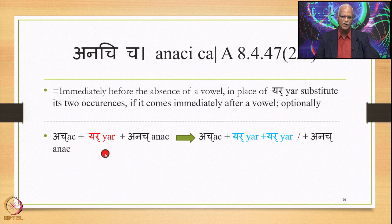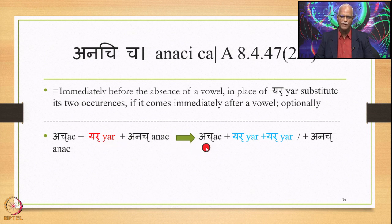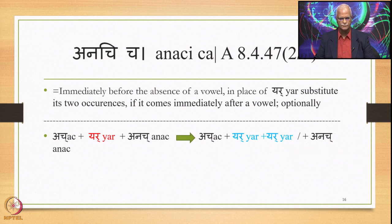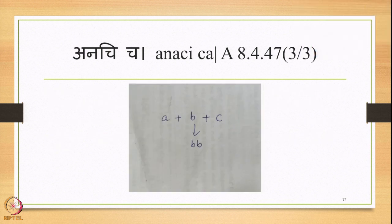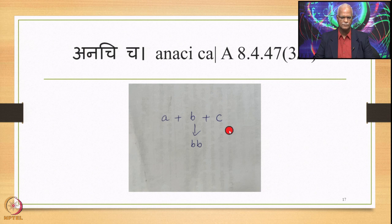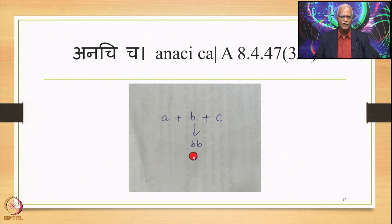So we have Ach + Yar + Anach. Given these environments, this Yar will be substituted by its two occurrences. The output after application of 8.447 is Ach + Yar + Yar + Anach, and this reduplication is optional. In diagram form: A + B + C as input gives A + BB + C as output.